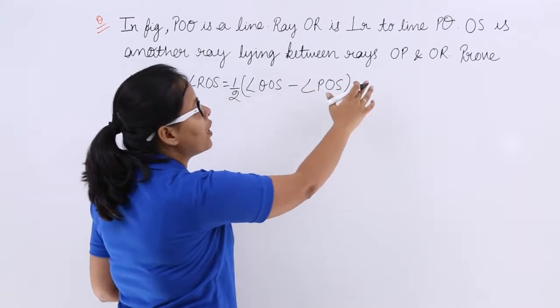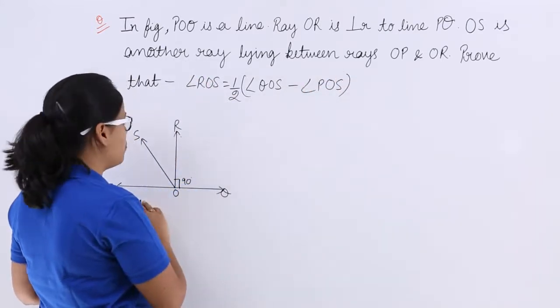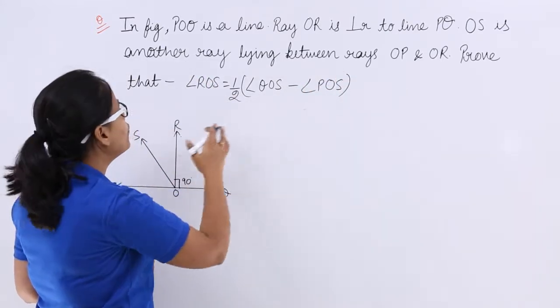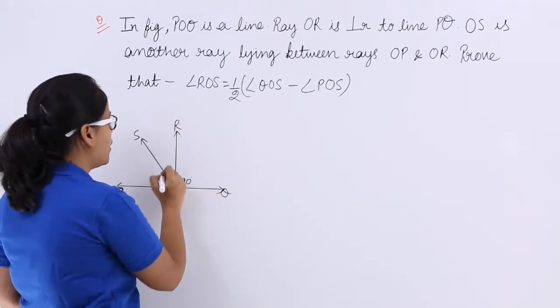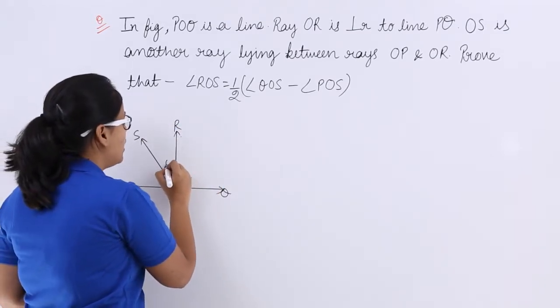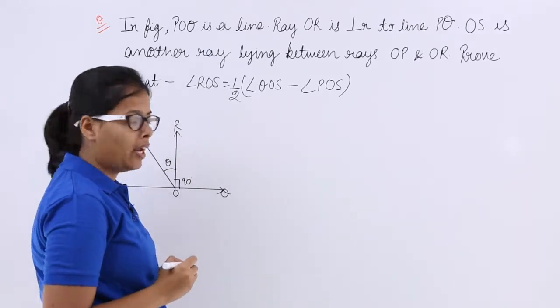Another line between rays OP and OR, this is OP and this being OR. Prove that angle ROS, where is angle ROS? Here you can see, name it as theta.